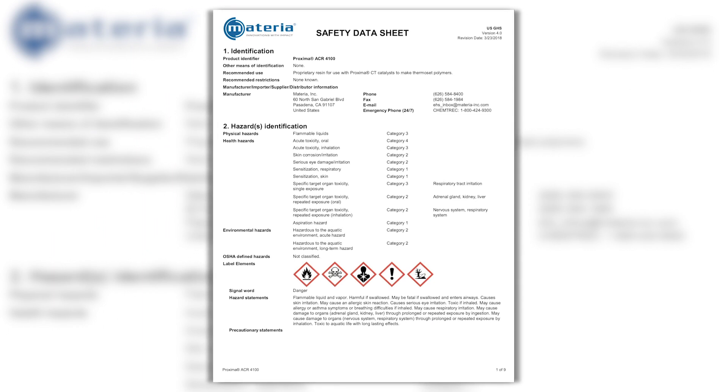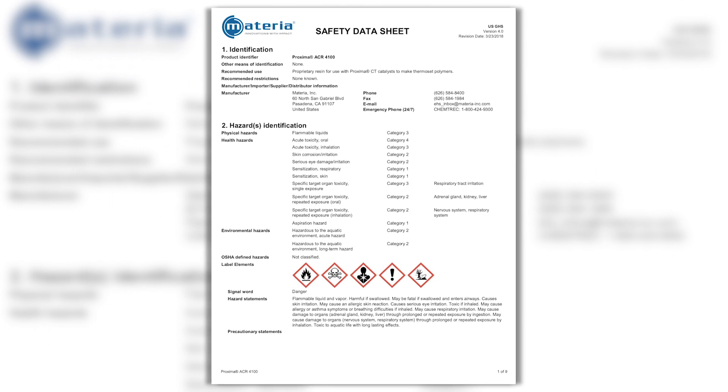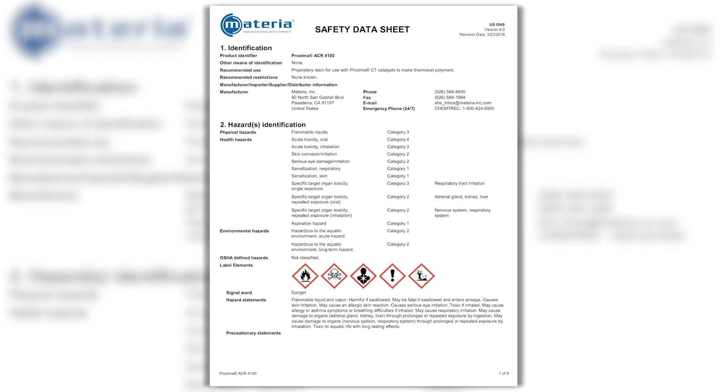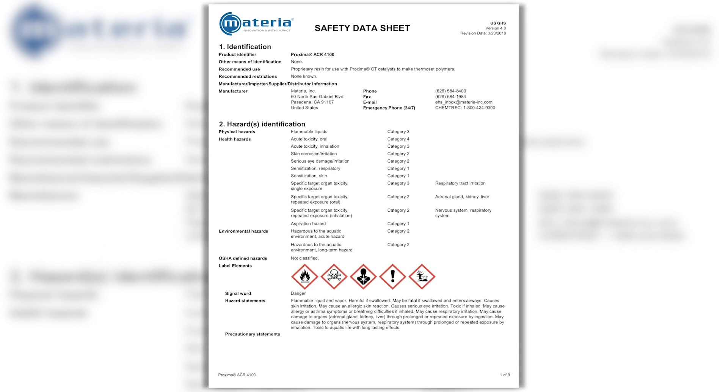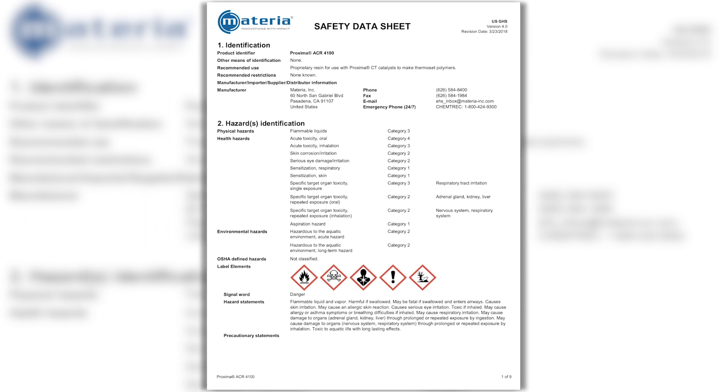Proxima ACR resins are categorized as GHS flammable liquids. Their flash points are above 100 degrees Fahrenheit, which allows them to be treated as combustible liquids in certain industries and applications. As a comparison, Acetone's flash point is less than 0 degrees Fahrenheit. Please review the SDS for all components for more information.